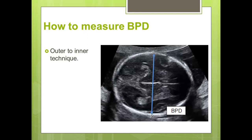How to measure? In either the lateral ventricular or thalamic view, measure from outer to inner. This is very important — not outer to outer, not inner to inner, but from the outer upper part to the inner lower part.